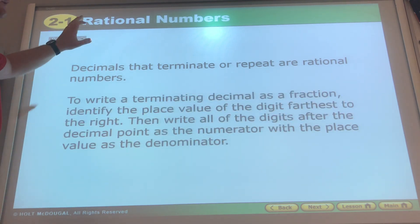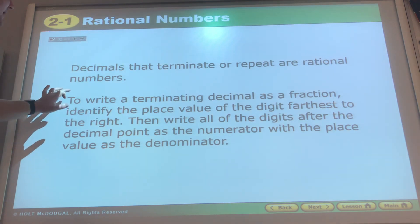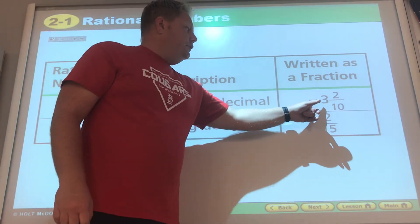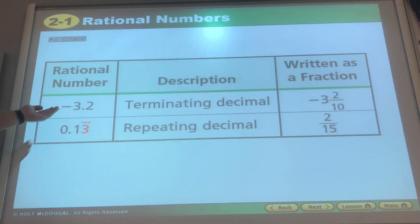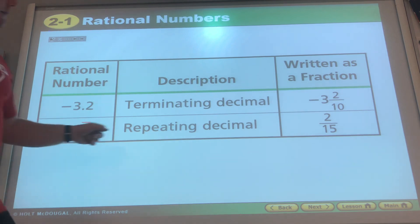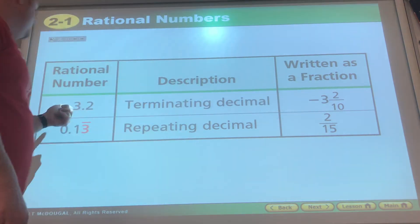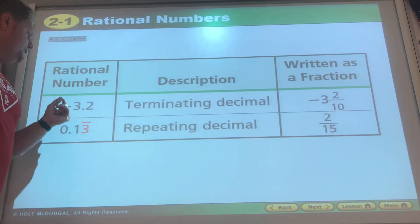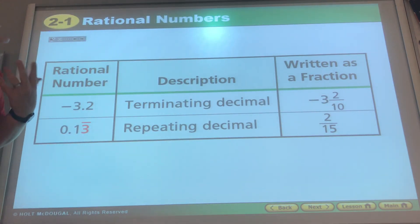We're not going to read that mathematical sounding stuff, we'll try to put that in common terms with the next slide. So -3.2 and -3 and 2/10 are the same number, written as a decimal that terminates or ends, written as a fraction. Three goes left of the decimal, 2 divided by 10 is 0.2, so -3.2, that's how they got there.